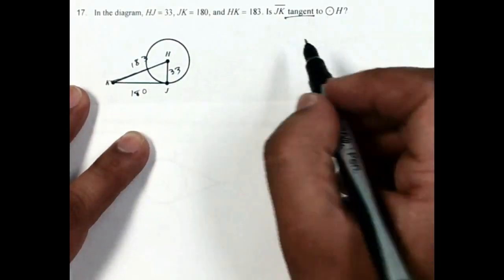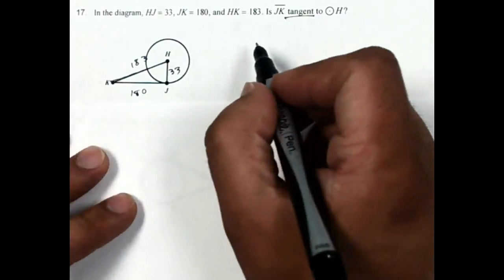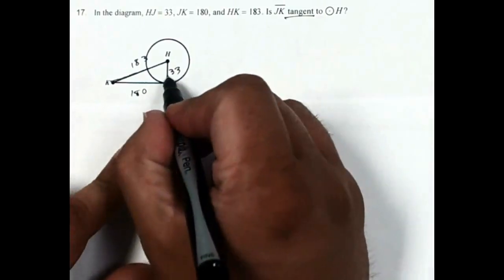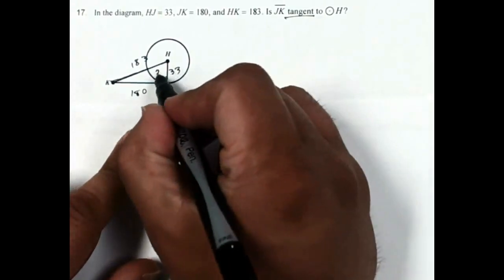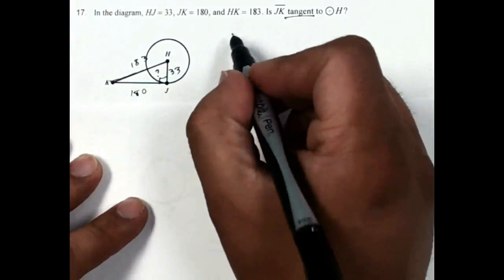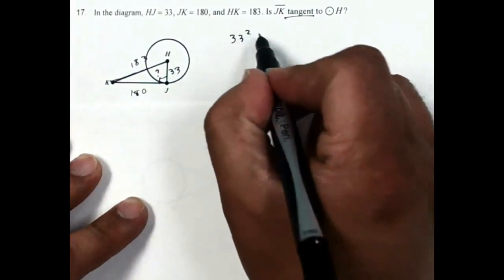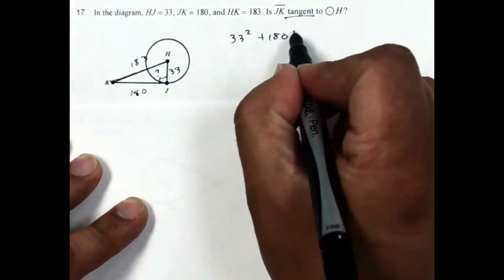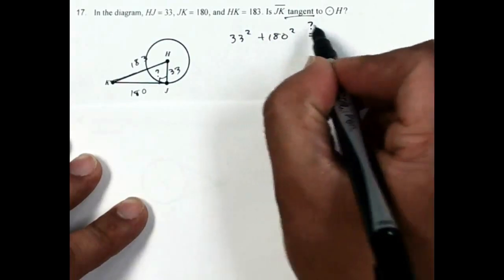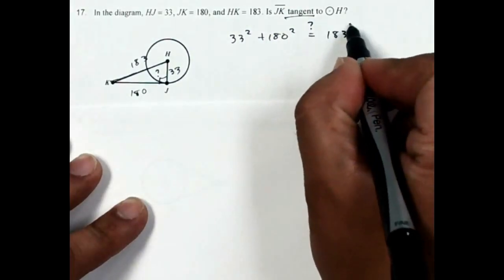I do want to see if it's tangent, so that means I'm going to have to use Pythagorean Theorem and see if this is, in fact, a right triangle. So I'm not sure. To do that, like the other problem, I have to do 33 squared plus 180 squared, and I want to see does that equal 183 squared.